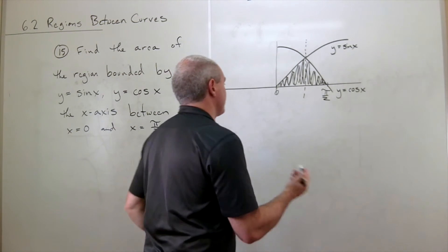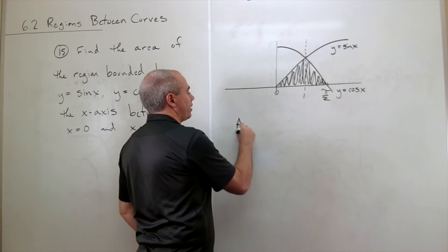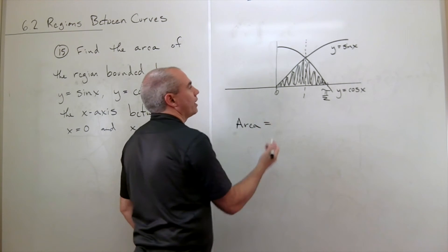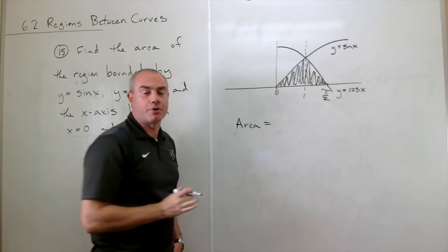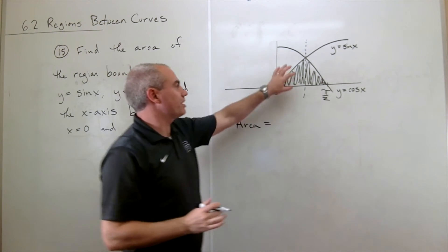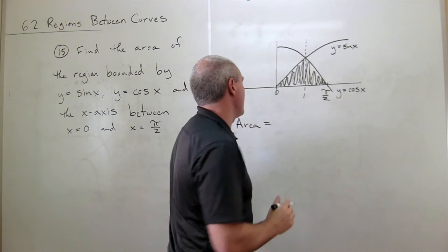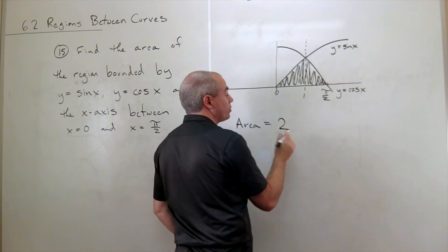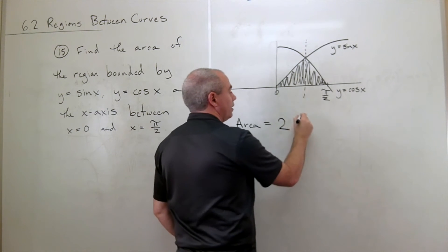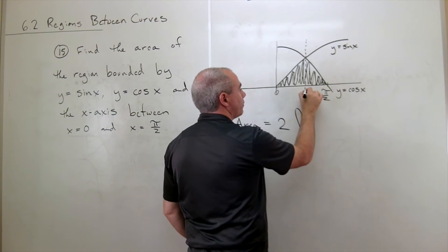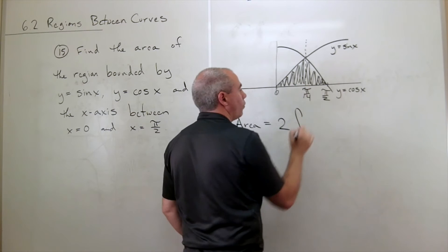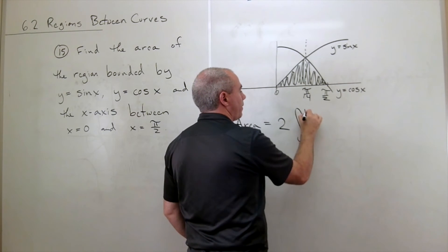So what I'm going to do is I'm going to say, to find the area here, instead of trying to determine both of these areas as two separate integrals, what I'm going to do is I'm going to just calculate the one and double it. So let's say it's 2, because I'm doubling it, the integral from 0 to, halfway there would be pi over 4, so from 0 to pi over 4,